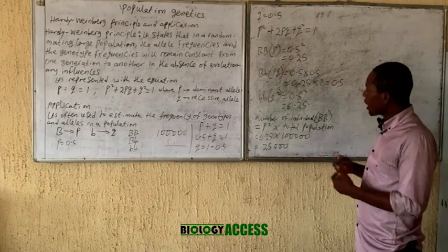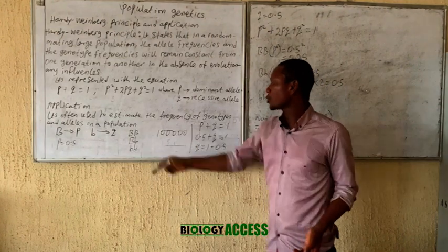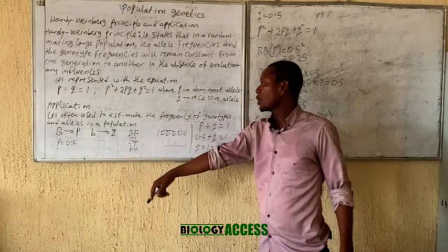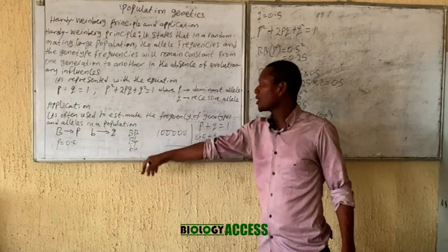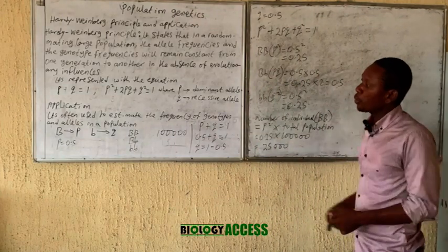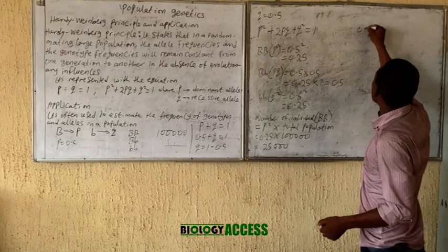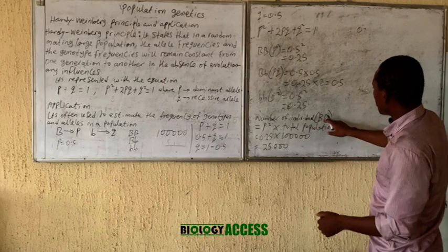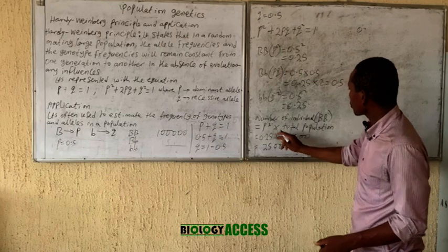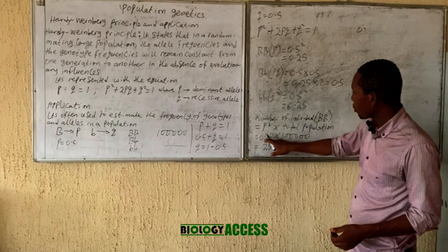Now, if you are asked to calculate the number of people that have each phenotype in a total population of 100,000 — the number of people with the homozygous dominant phenotype is P squared times the total population. P squared is 0.25. So we have 0.25 times 100,000.